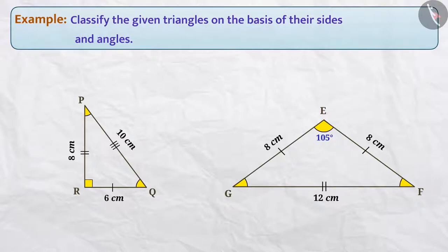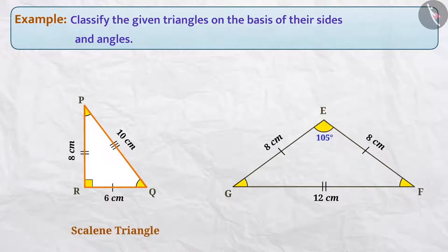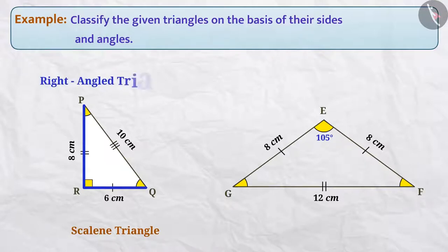If we talk about triangle PQR, the measurement of the three sides of this triangle is different. So, it is named on the basis of the sides — this triangle is called a scalene triangle. We can see that the angle PRQ in it is a right angle, so based on the angles, it will be classified as a right angled triangle.